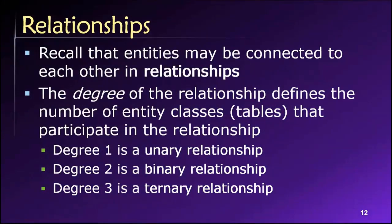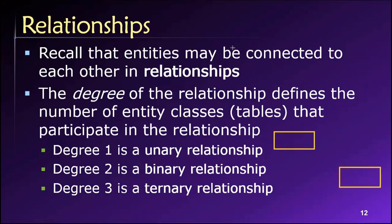Our third major component of entity relationship diagrams will be relationships. We've seen these before — we typically use a line to represent a relationship between two or more entity classes. So we might have an entity class here and another one here, represented as rectangles, with some kind of line connecting them, indicating that the rows in one entity are related to the rows in the other entity in some way.